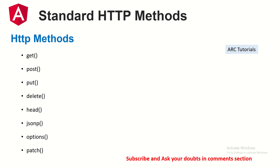Before we jump into HTTP Client, let's learn some basic fundamentals — without which anything I teach may sound a little over the top. Let's cover the standard HTTP methods. These are standard for everybody and all languages. Whenever we do communication using the HTTP protocol, we use these HTTP methods. GET means we are requesting a resource from the API. POST means we are trying to send data to the API. PUT means we are trying to update an existing resource. DELETE means we are deleting a resource by sending that information to the API. There's also HEAD, JSONP, OPTIONS, and PATCH.